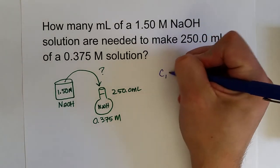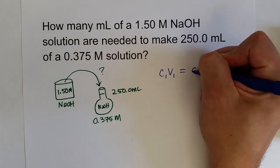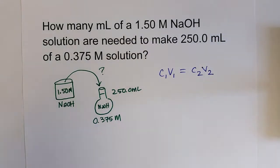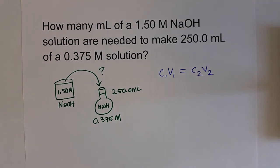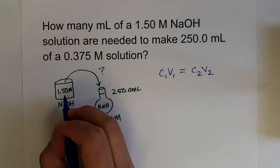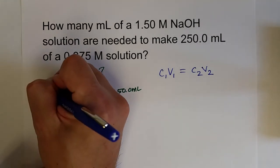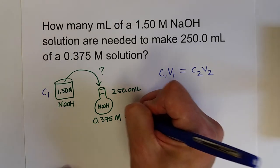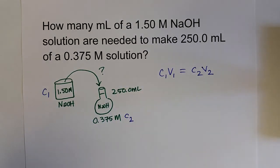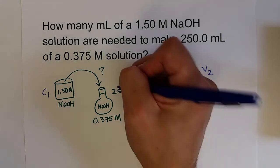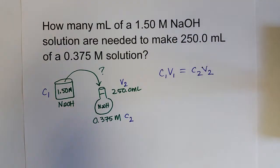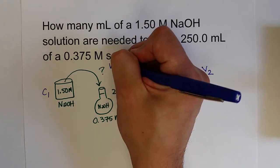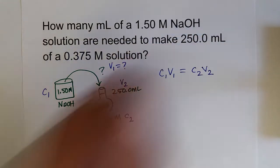I just need to use my handy dandy equation C1 V1 equals C2 V2. Now I just need to identify the variables. 1.5 molar, that's the concentration of my stock solution, so I call that C1. 0.375, that's my new solution, so that's the concentration of my new solution, C2. And I know I want to make 250 milliliters of that solution, so that would be V2. And I'm looking for V1, how much of my stock solution I need to use.